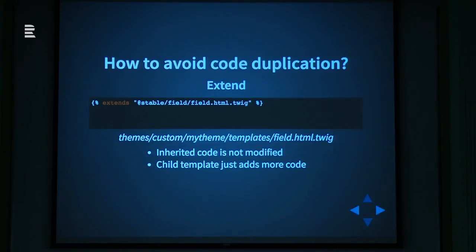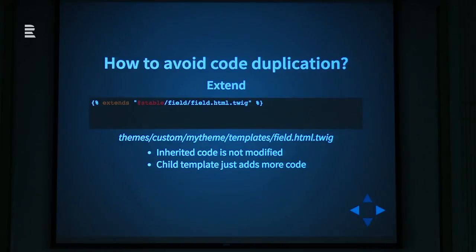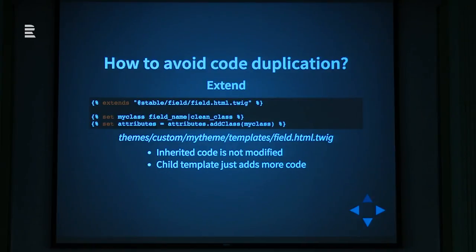It's really easy - that's all you have to do. We're using the Extend tag here, that's the key for the function. And after that Twig tag, we just write down the path to our parent template. One thing is also important: in this case we are using a namespace path. This means exactly that we want to reuse the field.html.twig template in the stable theme - our source code is in another theme. If that is the case, we just have to use this namespace. And after that, we just add our own code.